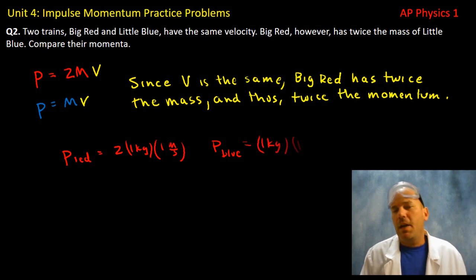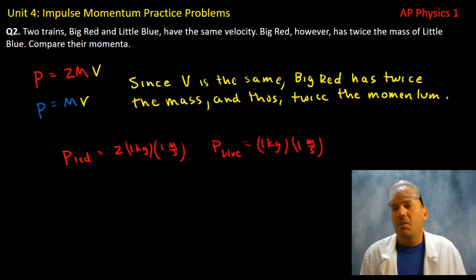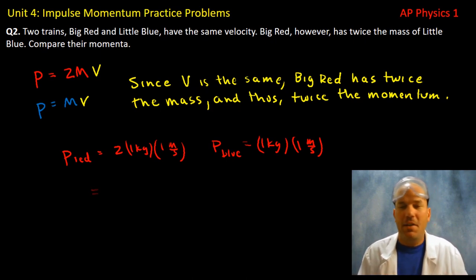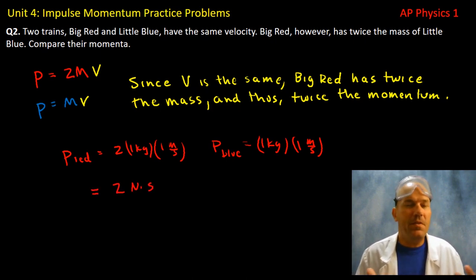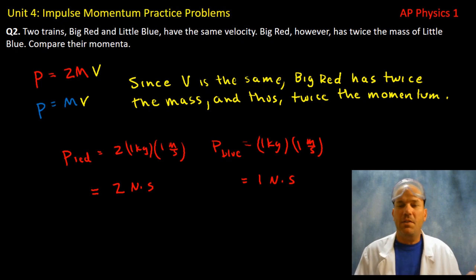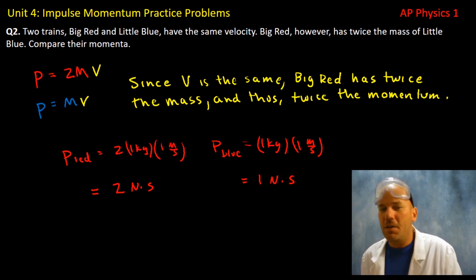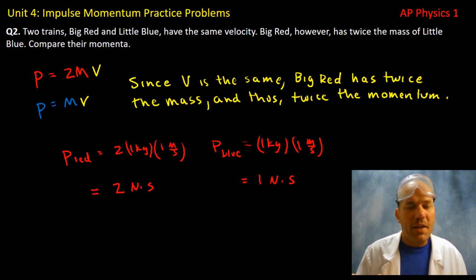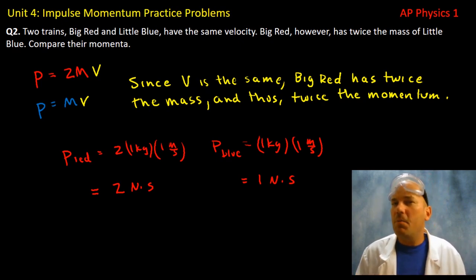If we call the mass one kilogram, it's very obvious — we get two newton-seconds compared to one newton-second. Make up numbers if you need to.